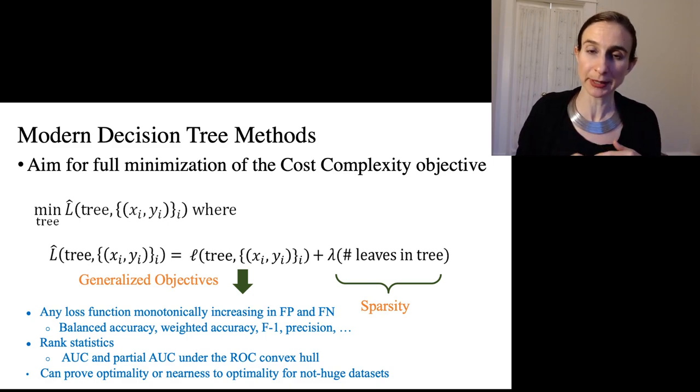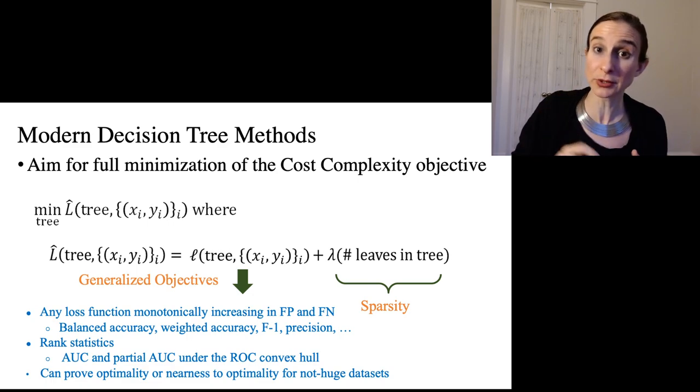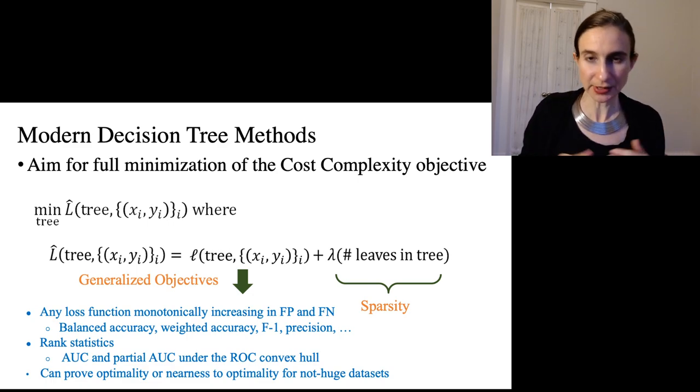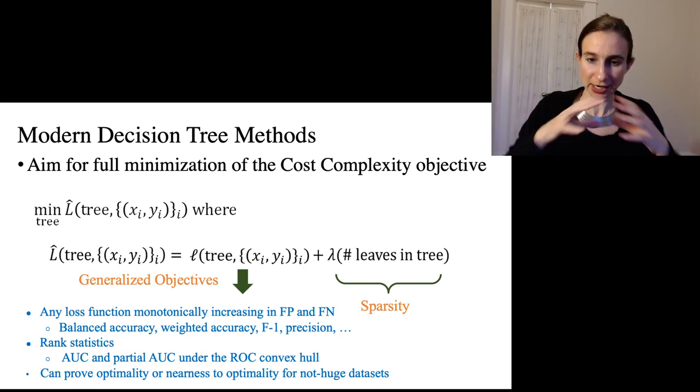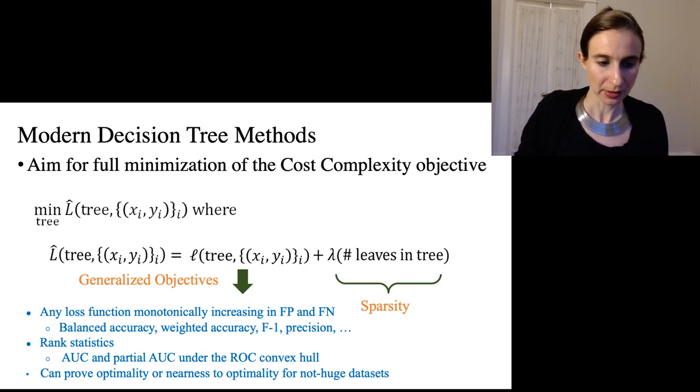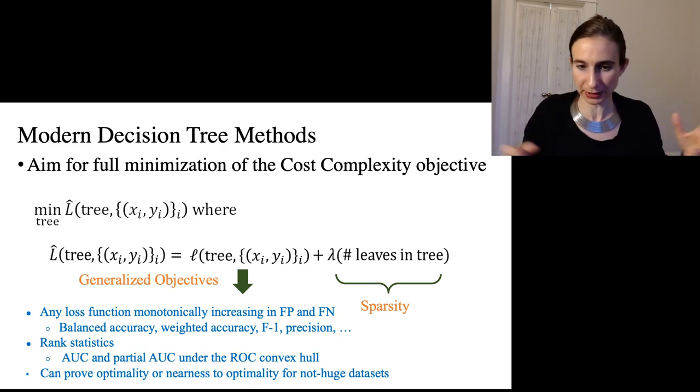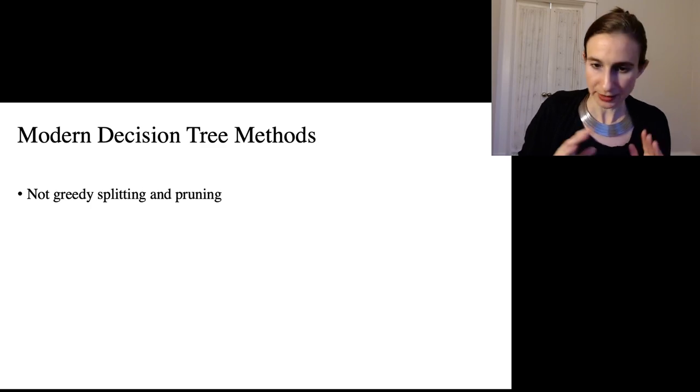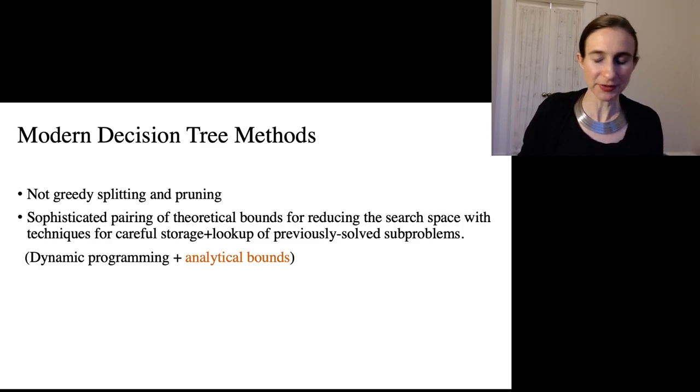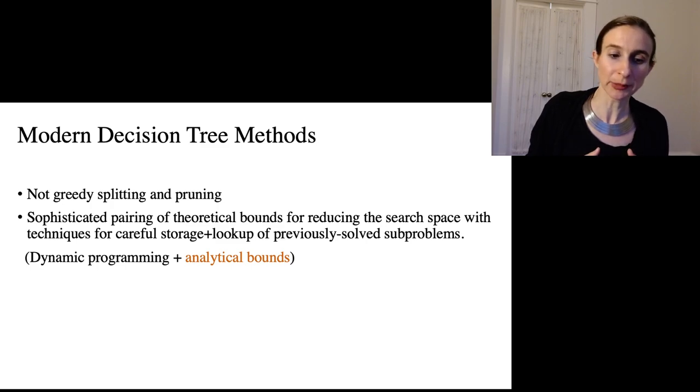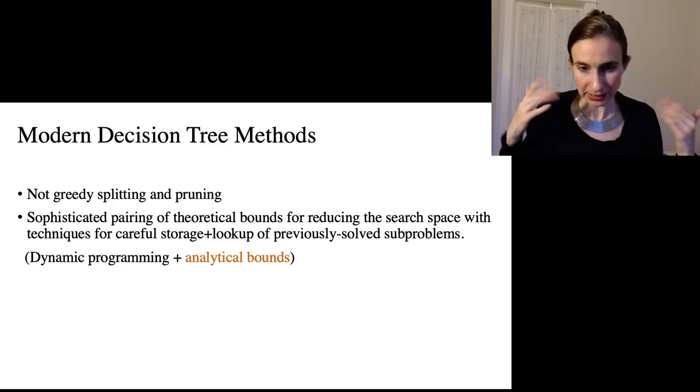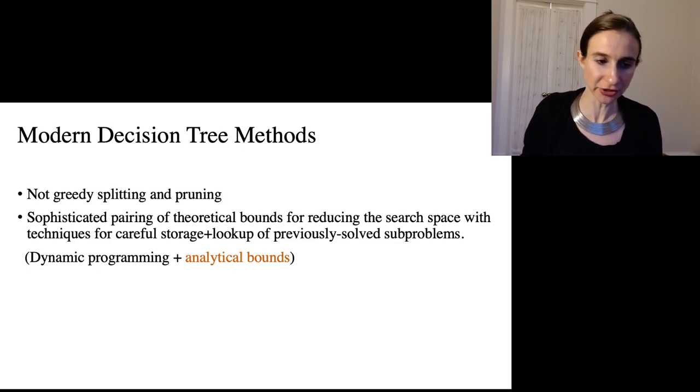And if it doesn't hit provable optimality, you get a bound on how close it is to being optimal. The only issue is that it doesn't work for huge data sets because it's actually doing a full optimization over this massive search space. So it's considering every size of decision tree, every possible condition you can place on each split. Okay, it's not a greedy splitting and pruning method. It's actually a sophisticated pairing of theoretical bounds for reducing the search space with techniques for careful storage and lookup of previously solved subproblems so that you don't have to repeat computations over and over again. And if you're familiar with this terminology, it's actually a dynamic programming algorithm that uses analytical bounds to try to chop off big pieces of the search space.